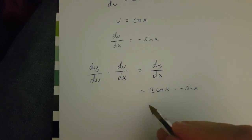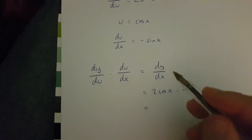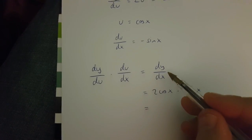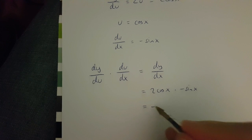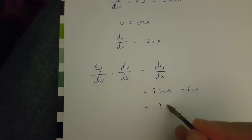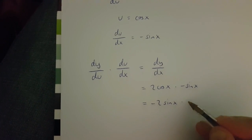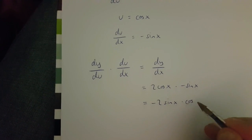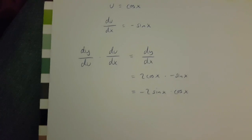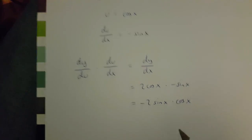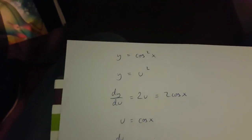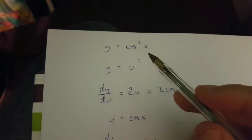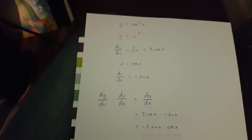So this means that dy over dx is going to be equal to minus 2 sin x times cos x. And this is y equals cos x squared differentiated. Now let's go ahead.